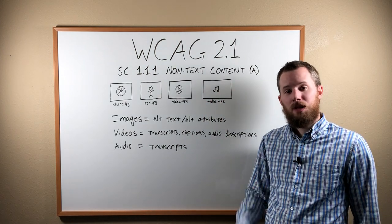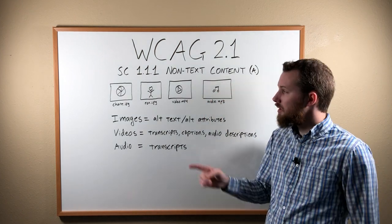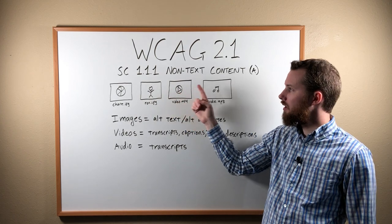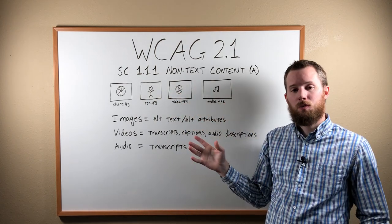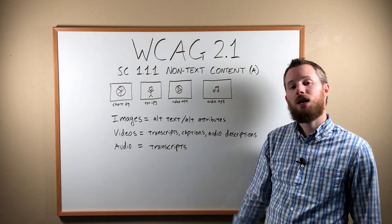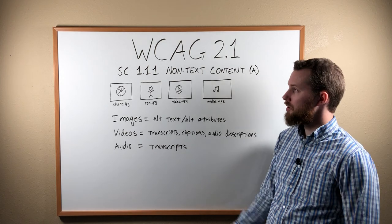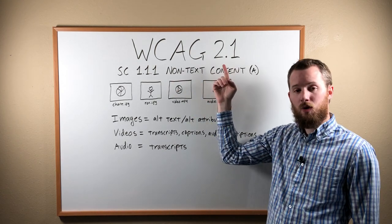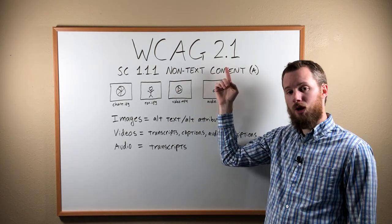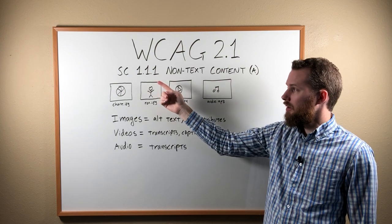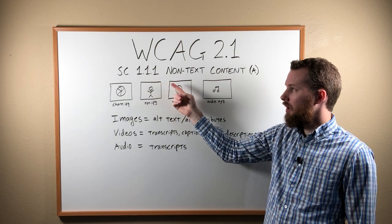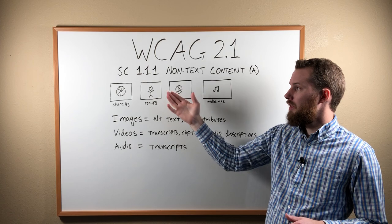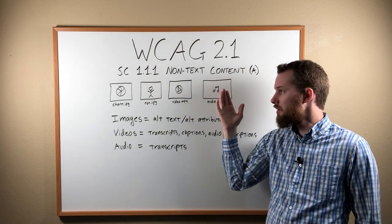Hi there, I'm Ron Stauffer. This video is all about Success Criterion 1.1.1 Non-text Content, which is part of the Web Content Accessibility Guidelines, also known as WCAG. The most recent version is 2.1. Success Criterion 1.1.1 is one of many criteria within the WCAG 2.1 guidelines.